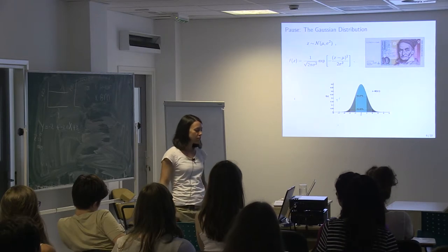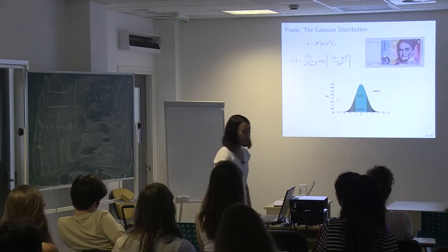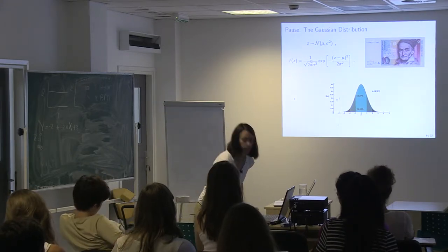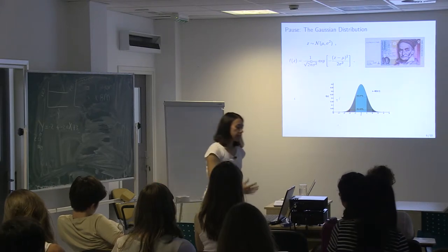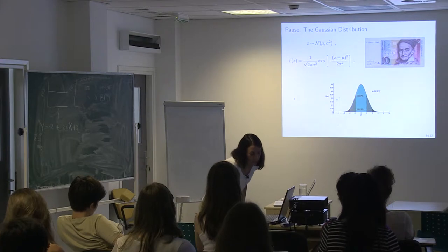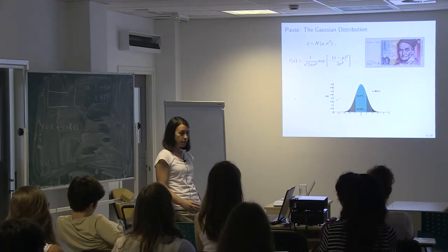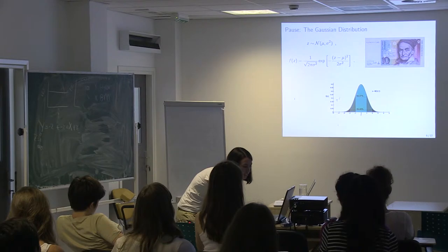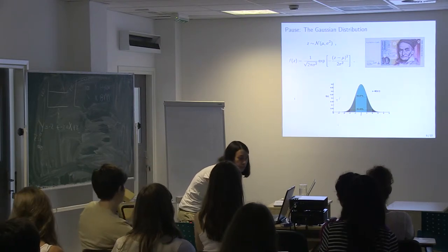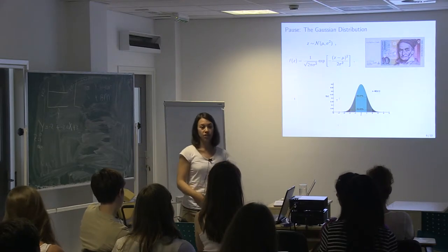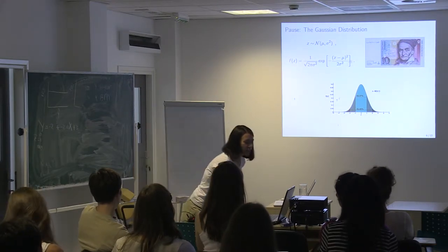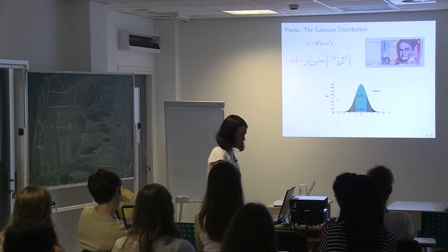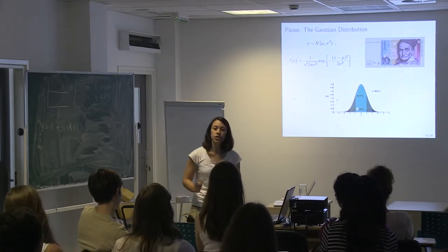If we have a variable z distributed according to a normal distribution, this formula gives us the density function of the Gaussian distribution. Interestingly, this was on the 10 German marks before the euro — there's actually a Gaussian bell curve and the formula printed on the note. There was a joke that German students wouldn't need to learn this formula because they could just take money out of their pocket in exams.